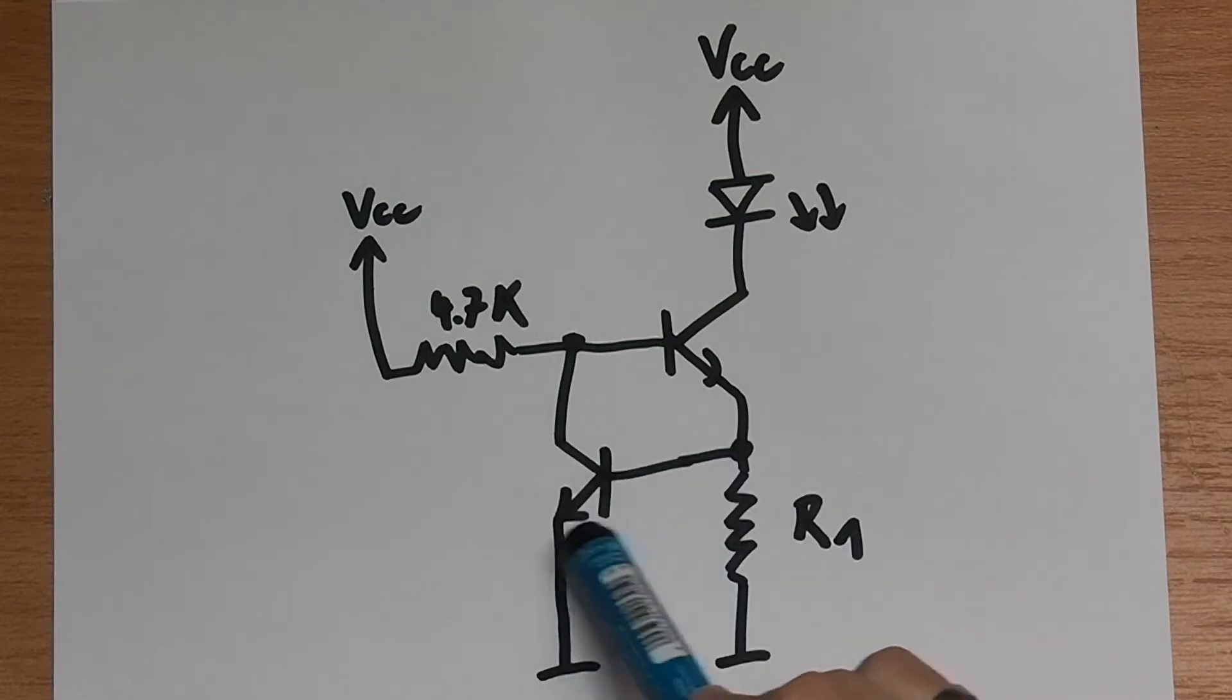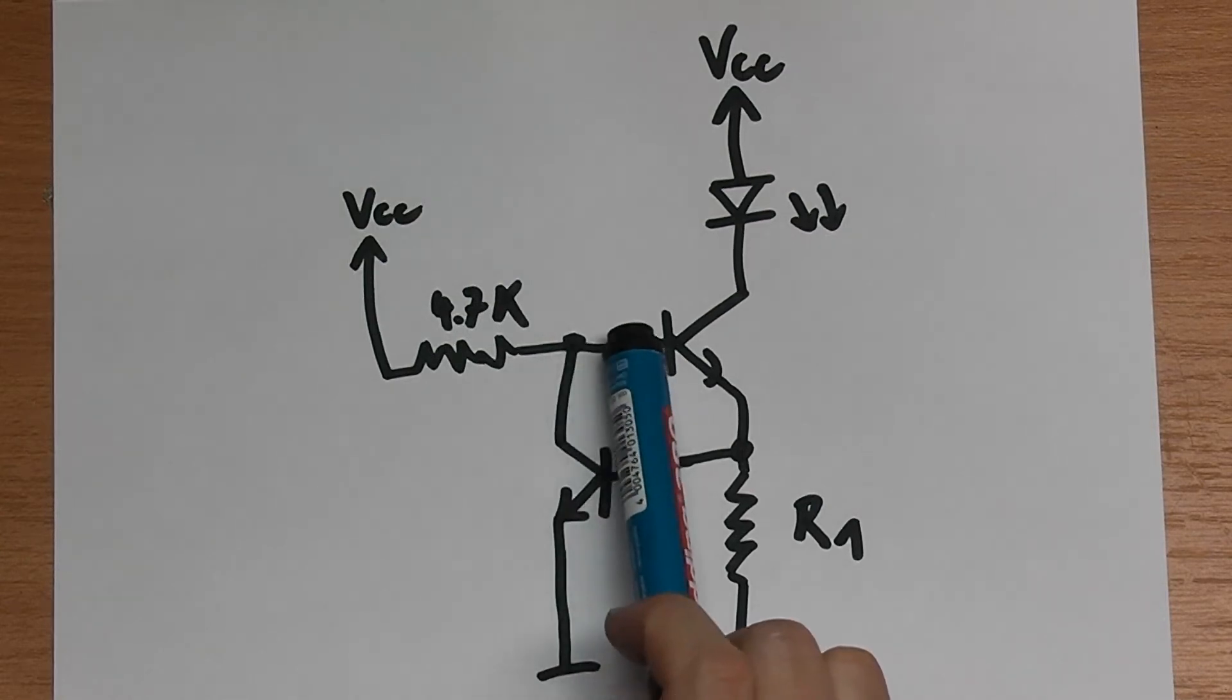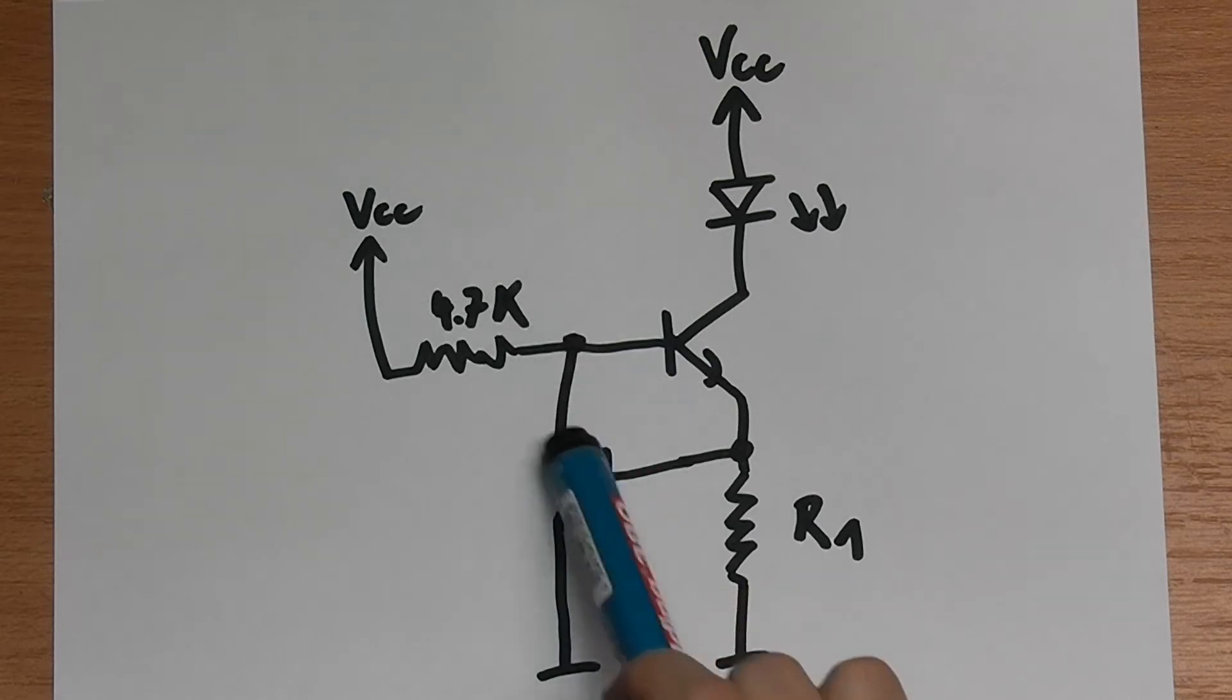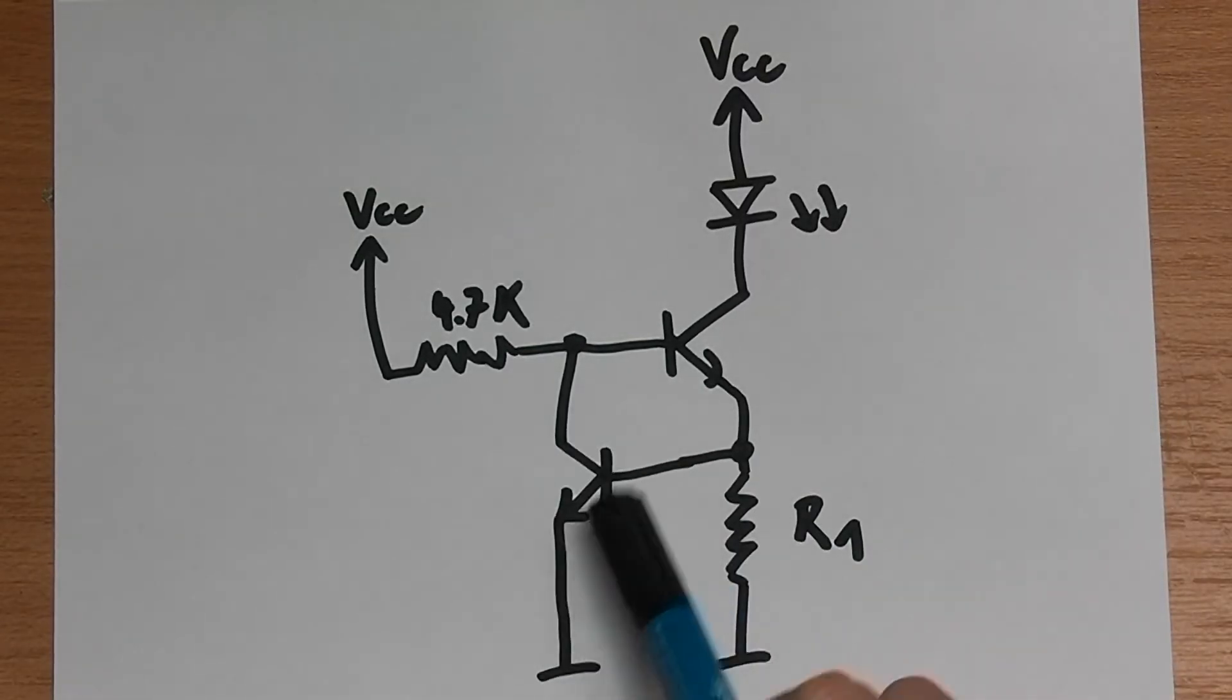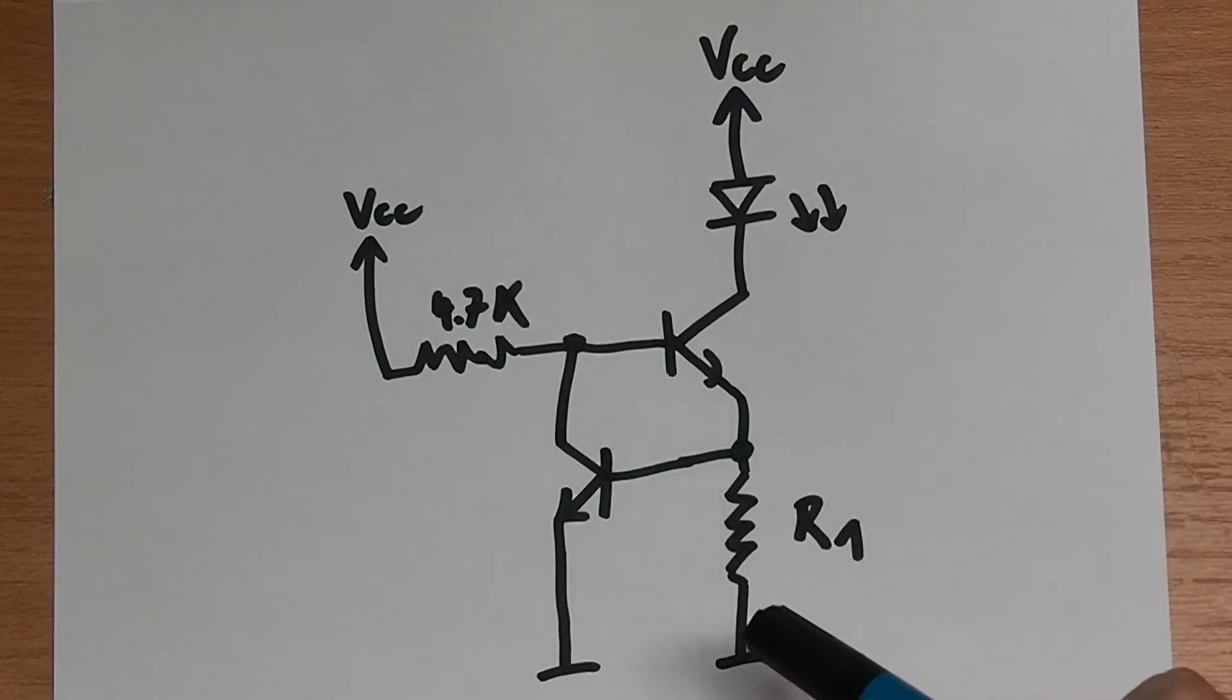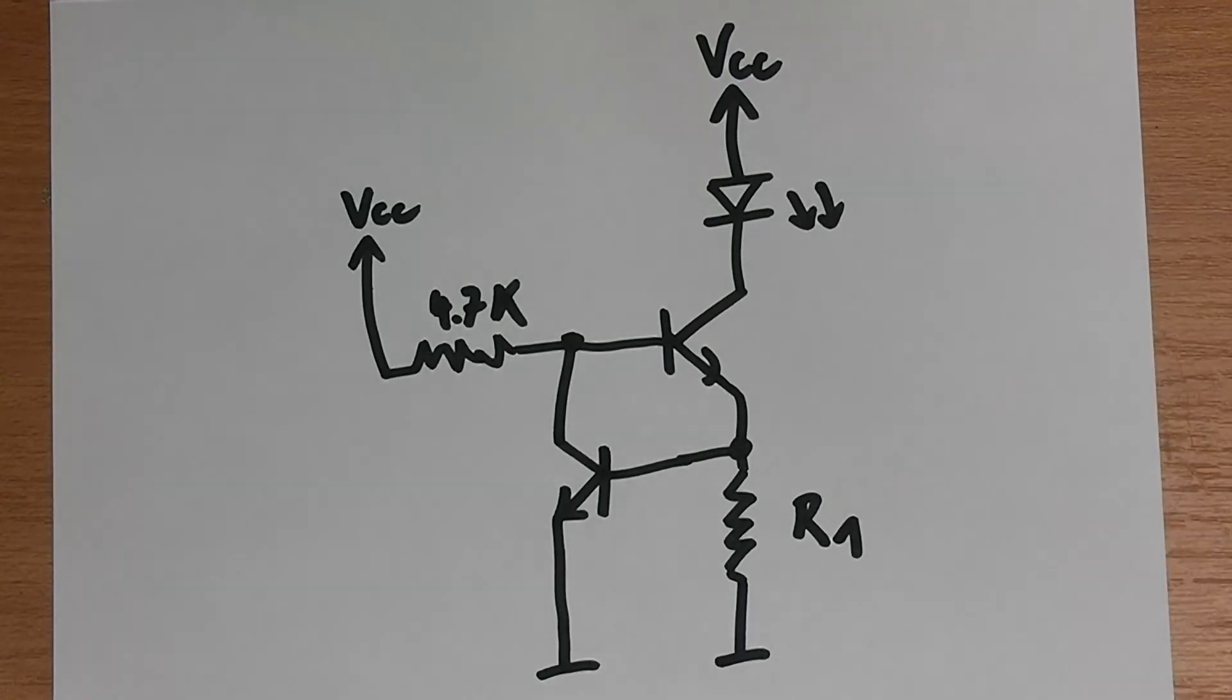This point is connected to the base of our second NPN transistor which means that the more current flows down here, the more turned on this transistor will be. And if this transistor turns on, it will basically shut off the second transistor. It will divert current down this path and it will basically decrease the voltage for the base of this one. So this is basically a negative feedback loop. The more current flows down here, the more turned on this one will get and the less turned on this one will get.